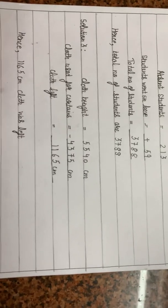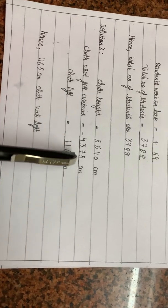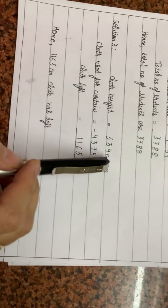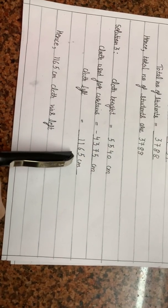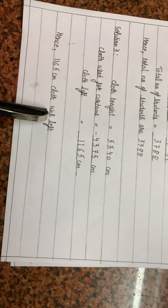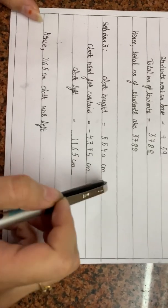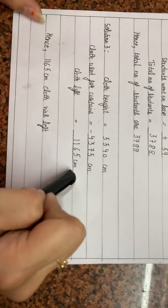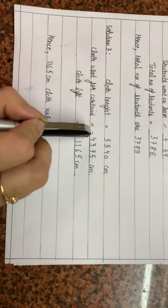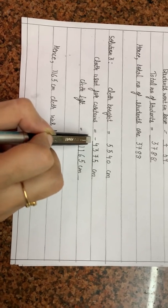Cloth bought: 5540 centimetres. Cloth used for curtains: 4375 centimetres. Cloth left — we will subtract — and our answer comes out to be 1165 centimetres. Hence 1165 centimetres of cloth was left. Always remember to put the unit along with the answer. If it is given in centimetres, put centimetres; if it is given in metres, put metres — otherwise marks will be deducted in your exam. And don't forget to put the operation sign, whether plus or minus.